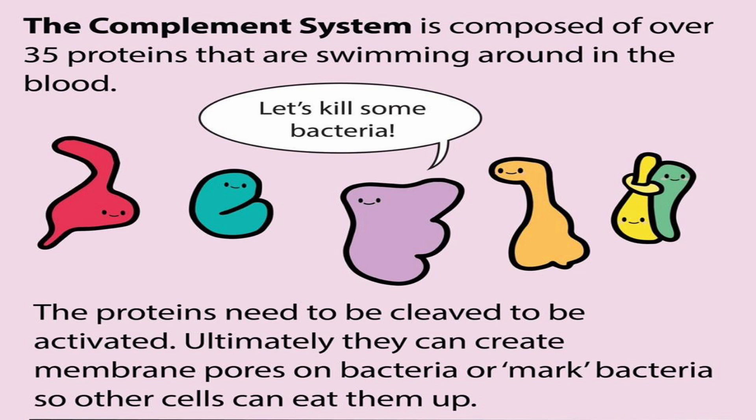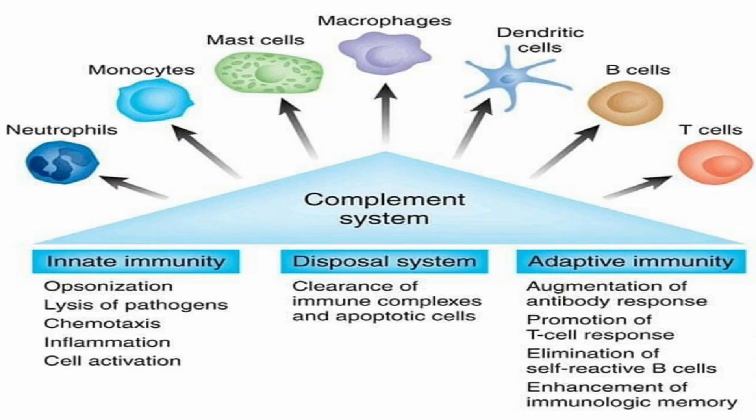This is the Complement System. In our body, there are different types of immunity: innate immunity and adaptive immunity. This complement system acts within innate immunity as a direct pathogen defense.